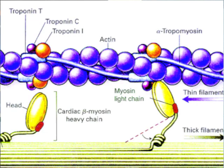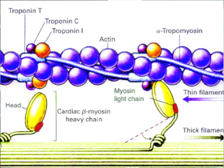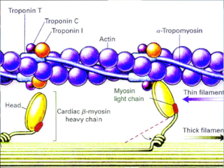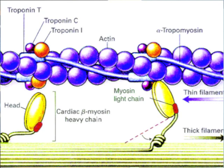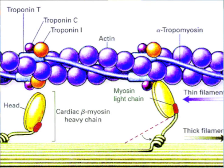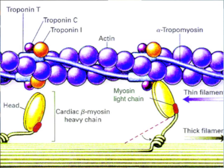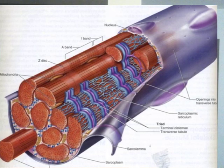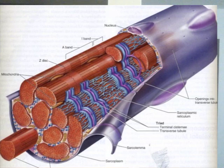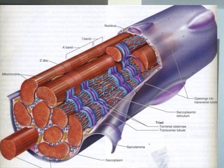After the complex is formed, the power stroke begins to occur. The power stroke is when the muscle itself contracts. What happens is the PI molecule comes off of the myosin head, and releases energy to pull actin towards the middle of the sarcomere. The Z-discs, which are on the outside of the sarcomere, are attached to actin and are pulled towards the center.